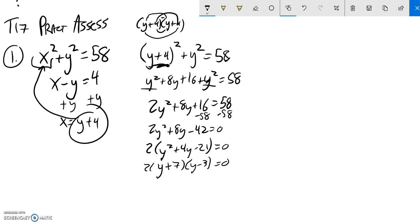These things multiplied together give me 0, so either this has to be 0 or this has to be 0. 2 isn't 0, so I have some things that y could be. Now what I can do is plug those back in to get my x values for when y are these values.